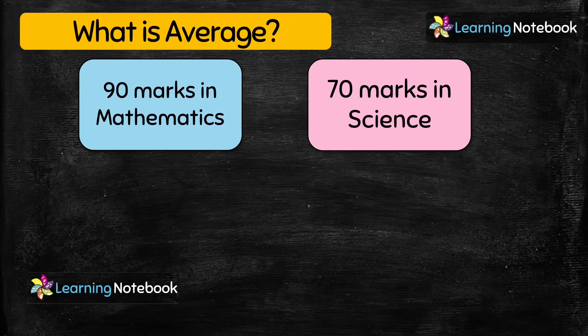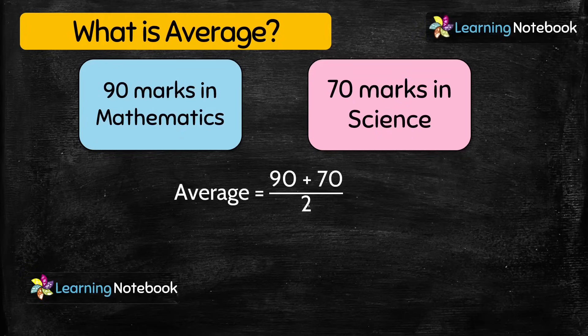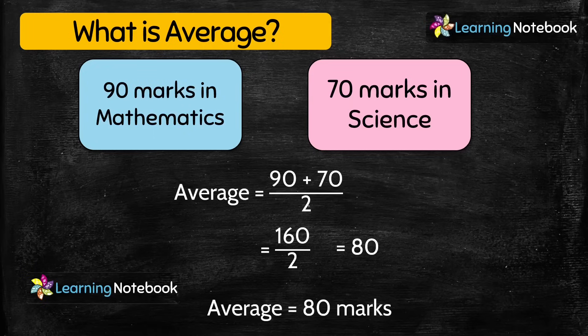How many subjects do we have here? Two. So to find the average, we will just add the marks of both subjects and divide by 2. So we will do 90 plus 70 divided by 2. 90 plus 70 equals 160, and 160 divided by 2 equals 80. So we have got the average as 80 marks per subject.